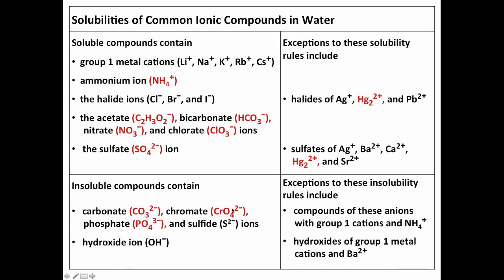but carbonates, chromates, phosphates, and things containing sulfide ion, those ionic compounds are generally insoluble, but there are some exceptions, and then same with hydroxide. So one thing you're going to want to be able to do is predict formation of precipitates, and you will have access to solubility rules to be able to do that.